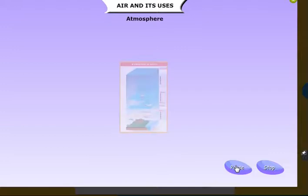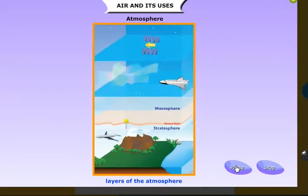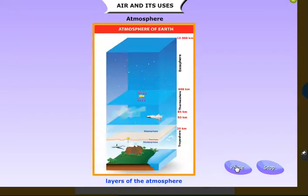The earth is surrounded by a blanket of air called the atmosphere. The atmosphere is kept in place by the gravitational force of the earth. The atmosphere consists of several layers: the lowest being the troposphere, then the stratosphere, and above that the mesosphere and ionosphere. Each sphere has its distinct properties.